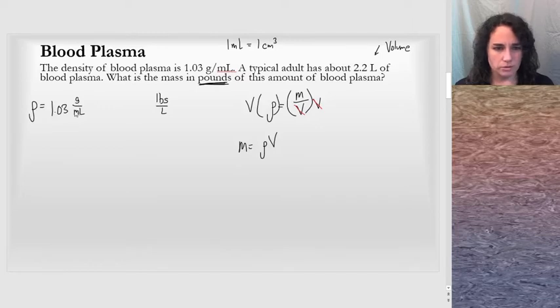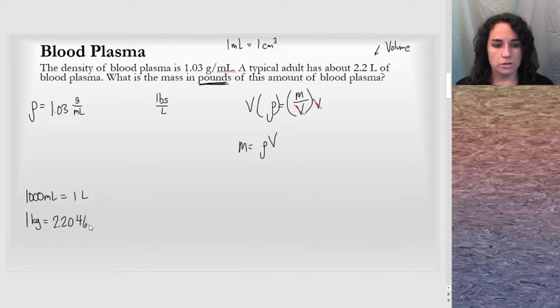So let's convert this to pounds, and we'll need a couple of conversion factors. We know that there's a thousand milliliters in one liter. That's something we're going to have to deal with, is milliliters to liters. And the other thing that we need is some information about the metric system to the British system. How many pounds? So I will write this down for us. One kilogram equals 2.204623 pounds. One kilogram is about 2.2 pounds.